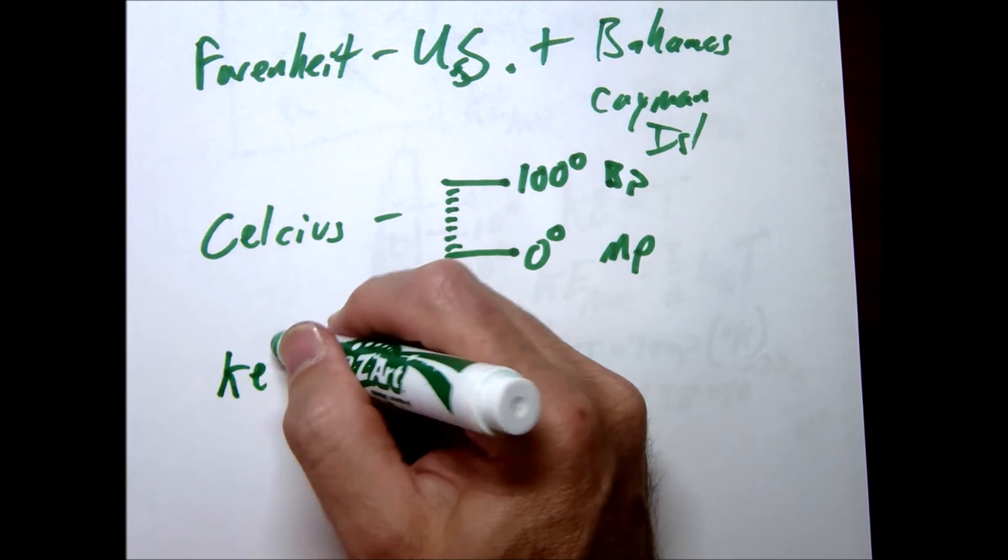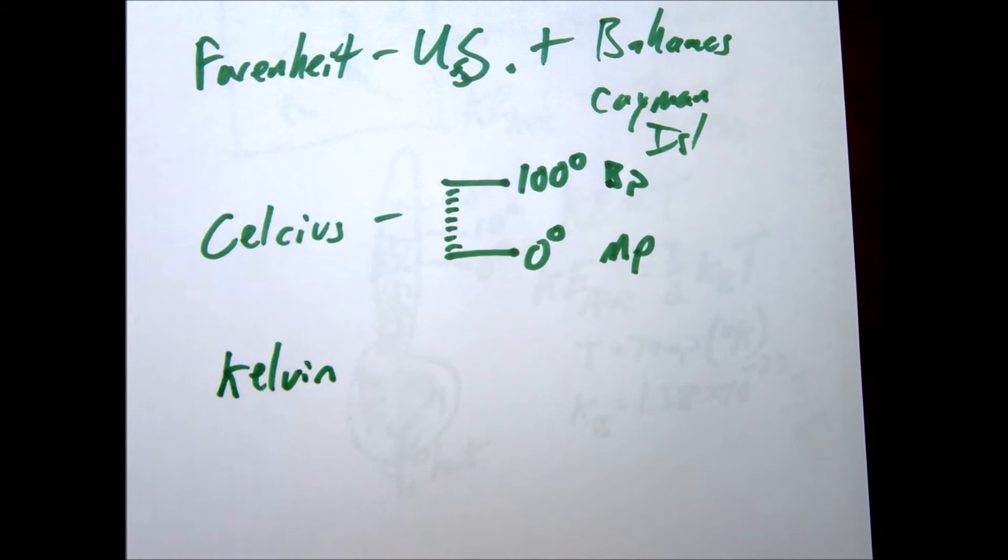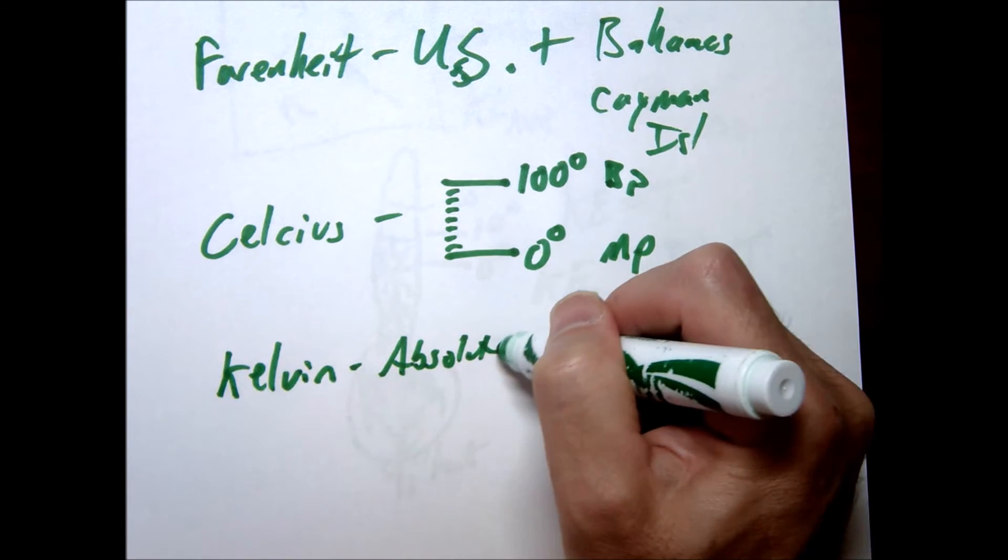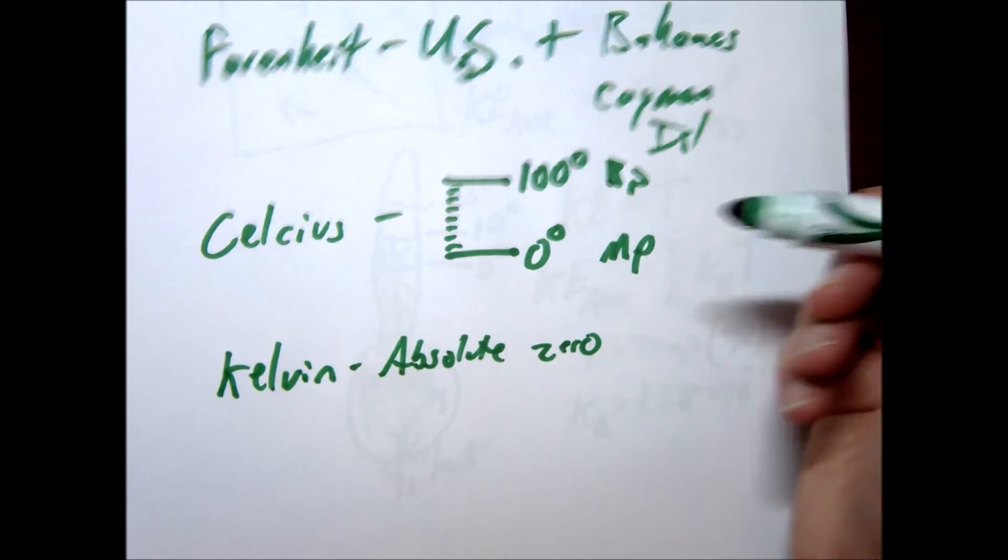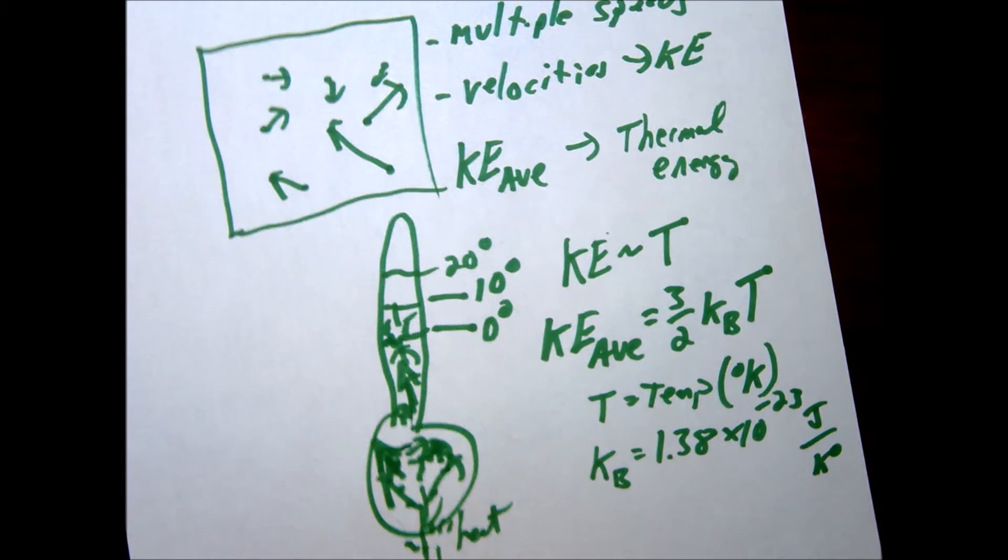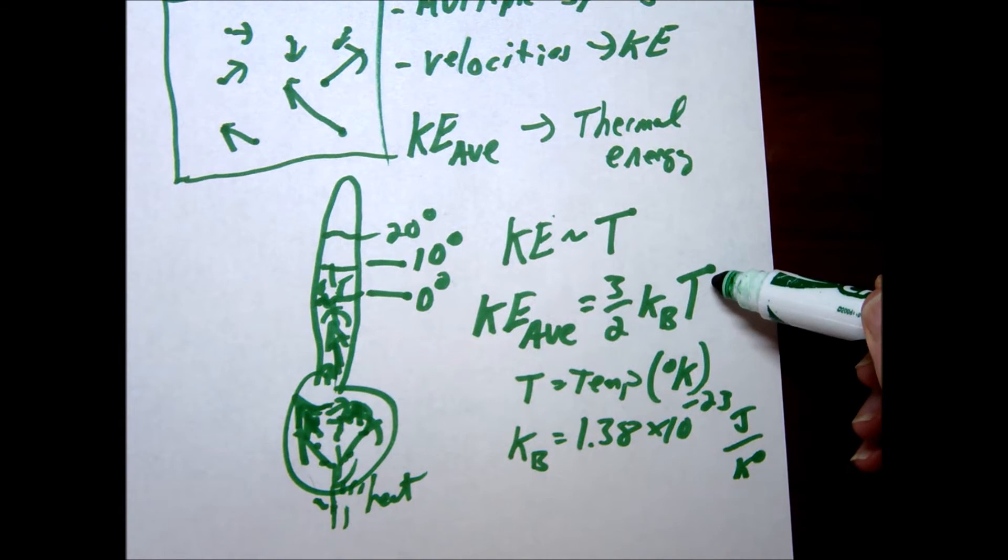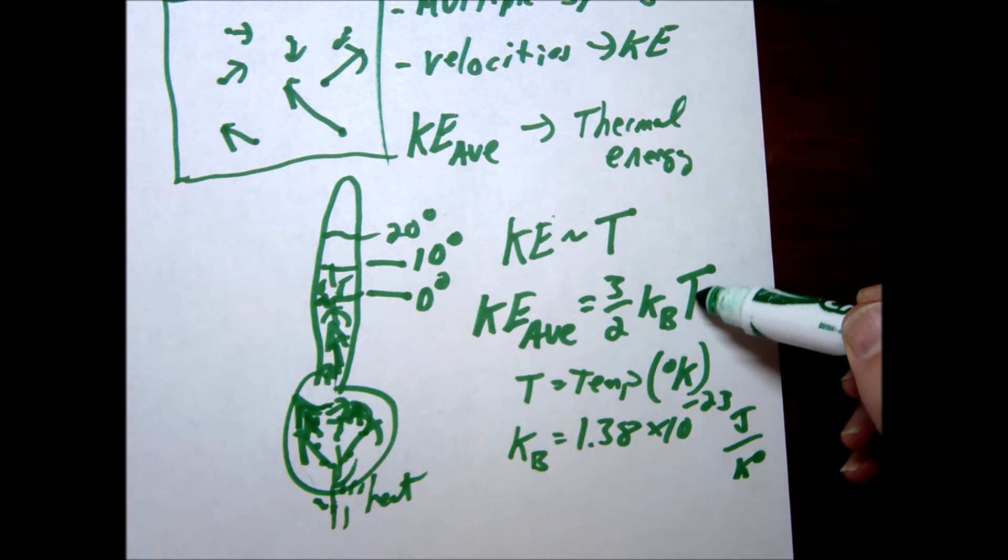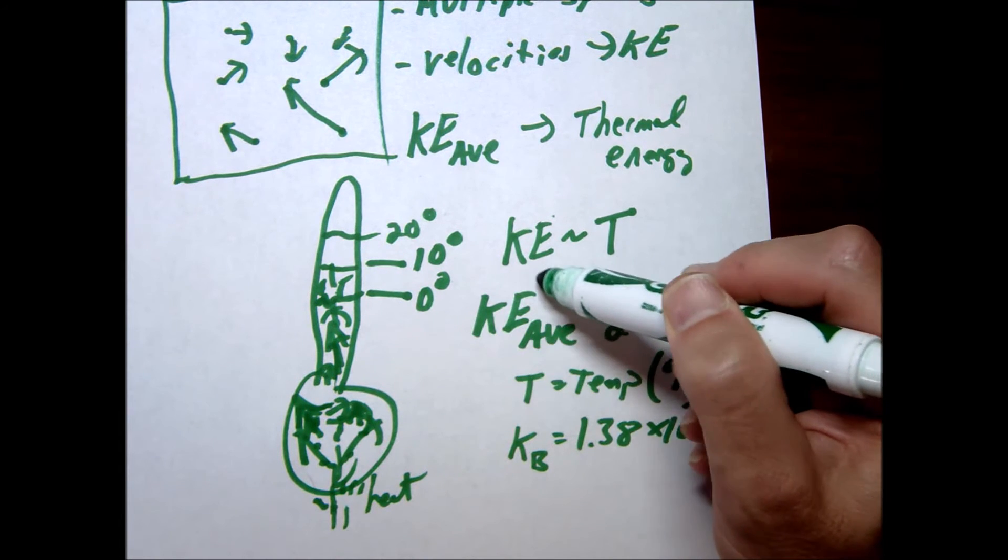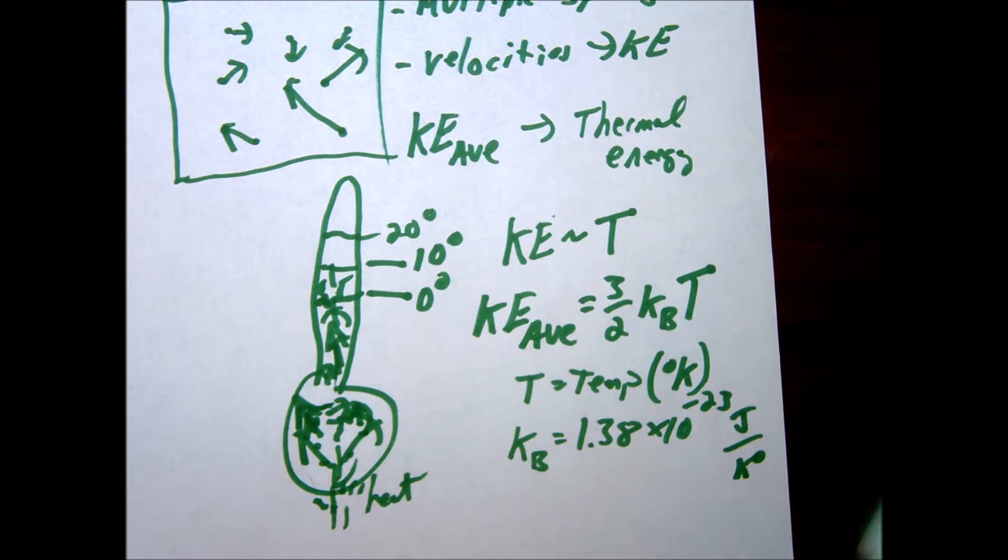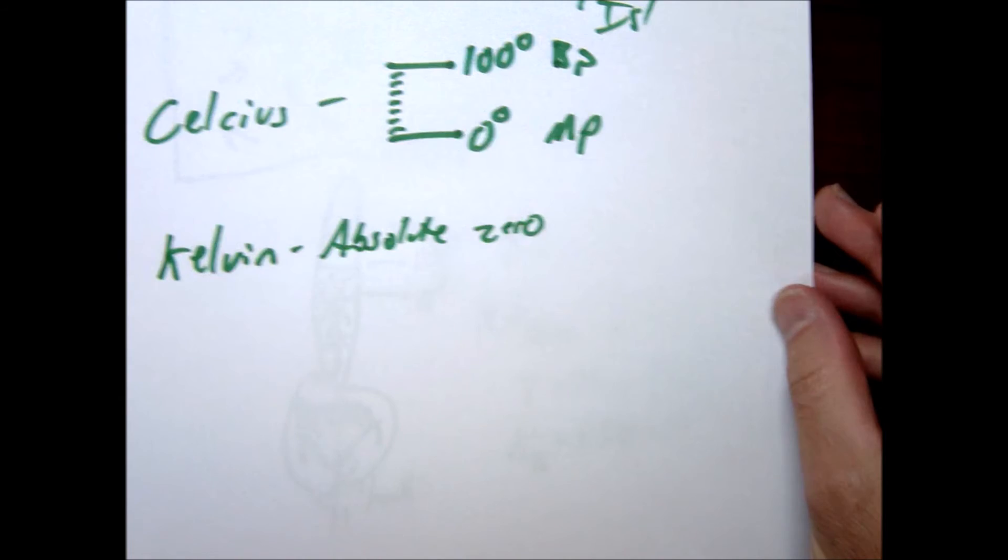Now the kelvin scale is based on essentially an absolute temperature, an absolute lowest possible temperature. And we call that absolute zero. If you look back at our last equation where we have KE equals three halves kBT, we'll notice if T gets smaller and smaller, eventually if it reaches zero, then that means that the atoms would stop moving. They have zero kinetic energy at that point. So that's our definition of kelvin.